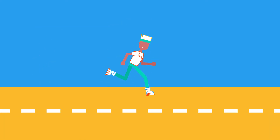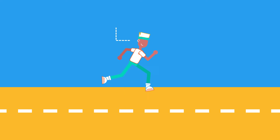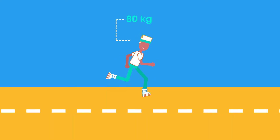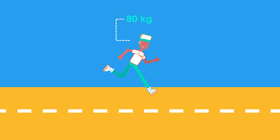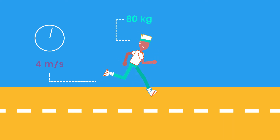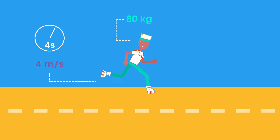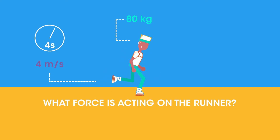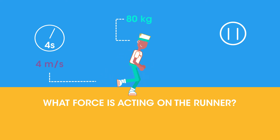Now you try. A runner of mass 80 kilograms starts a race, reaching a speed of 4 meters per second by 4 seconds. What force is acting on the runner? Pause the video while you work it out.